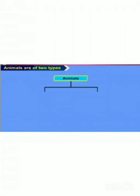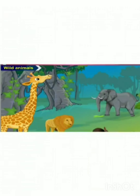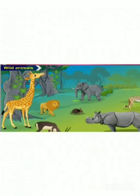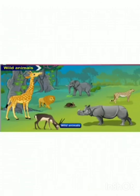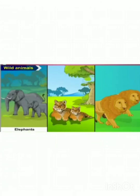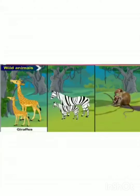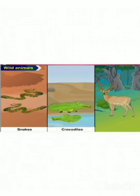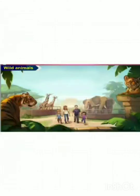Animals are of two types: wild animals and domestic animals. Wild animals: some animals live in the forest. They are called wild animals. Some of the wild animals are elephants, tigers, lions, giraffes, zebras, monkeys, snakes, crocodiles and deer. We can see these animals in a zoo also.